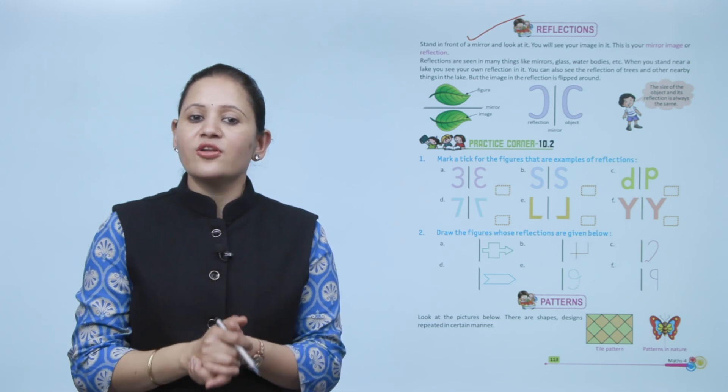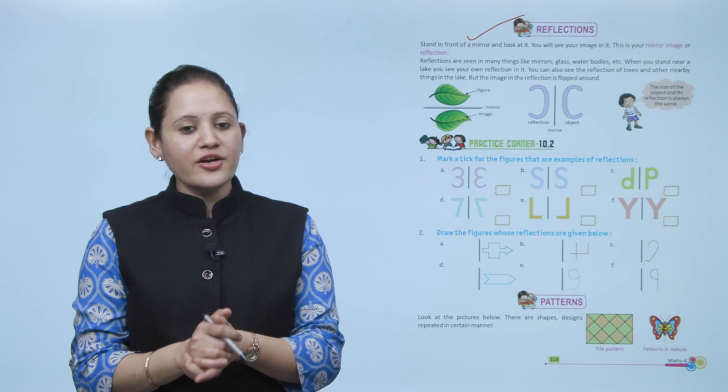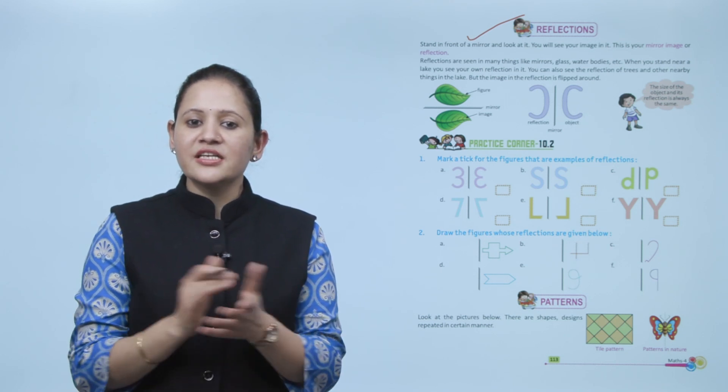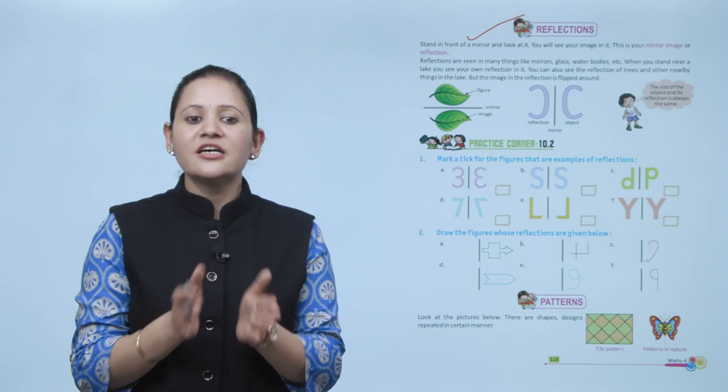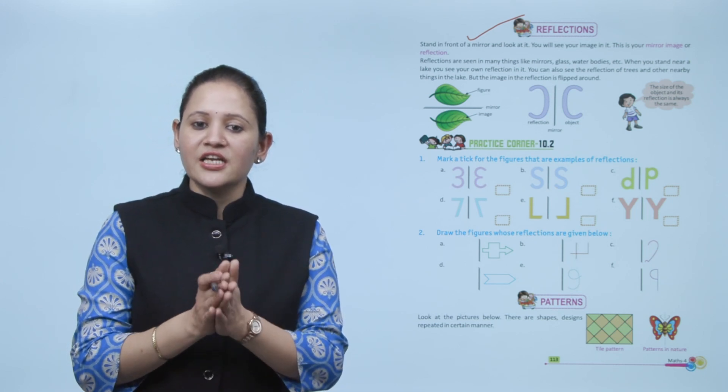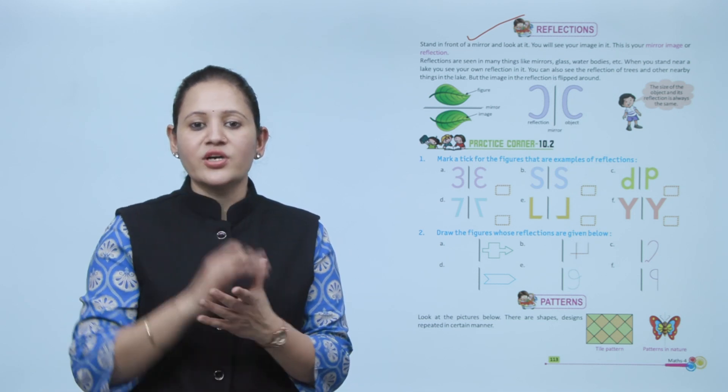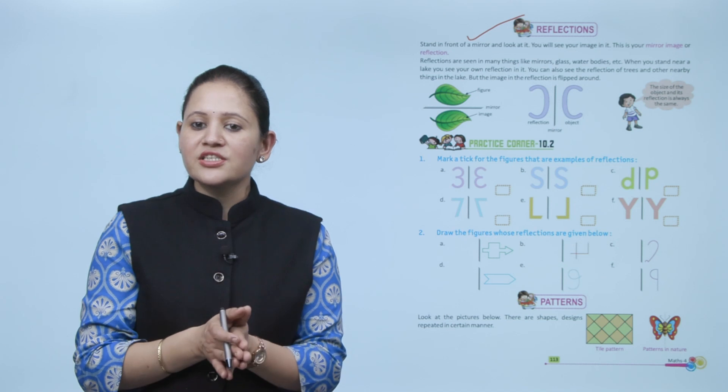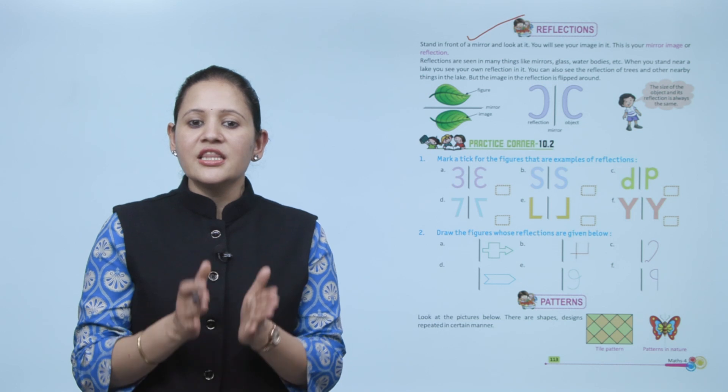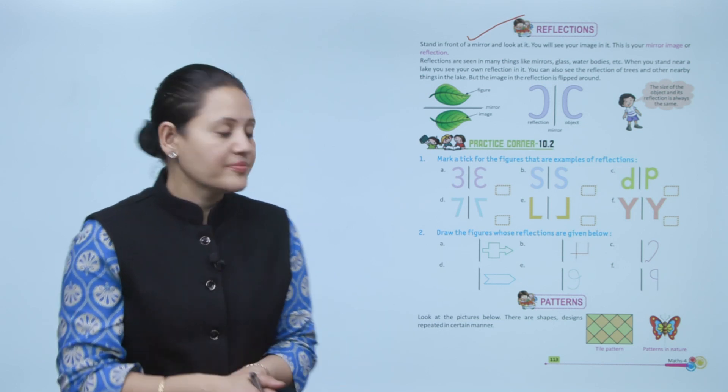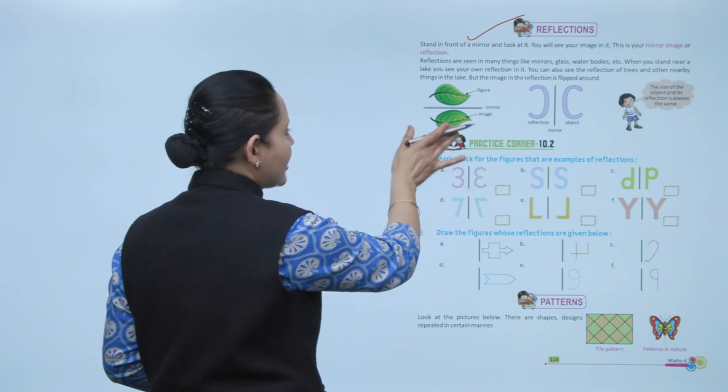Next is Reflections. Stand in front of a mirror and look at it - you will see your image in it. This is your mirror image or reflection. Reflections are seen in many things like mirrors, glass, water bodies, etc. When you stand near a lake, you see your reflection in it. You can also see the reflection of trees and other nearby things in the lake. The reflection is flipped around.